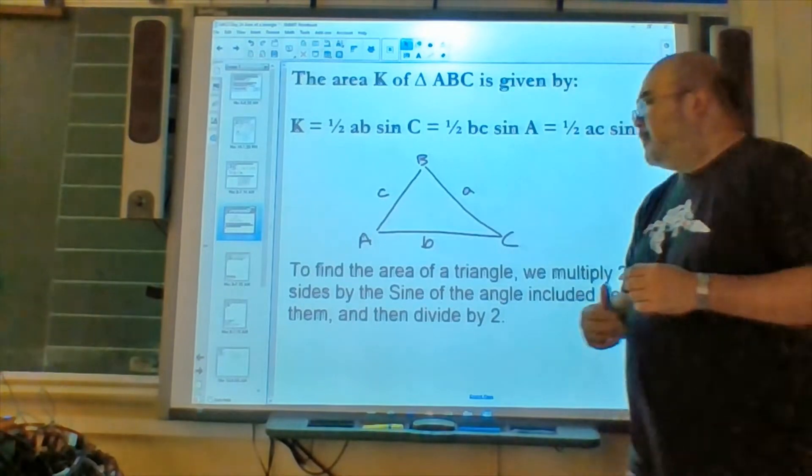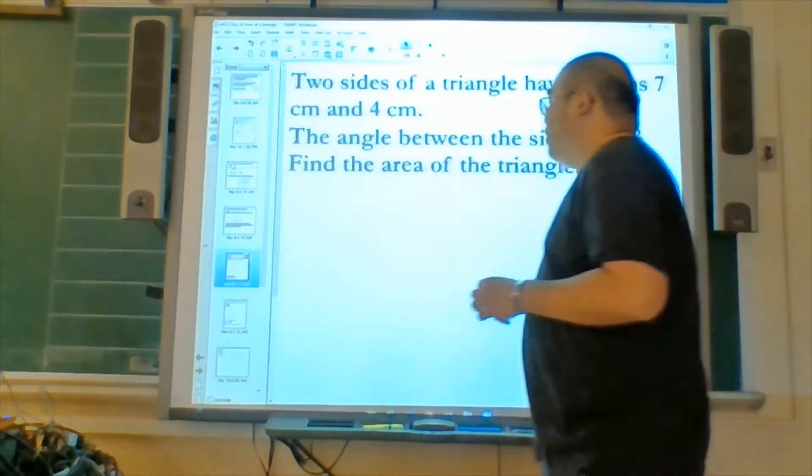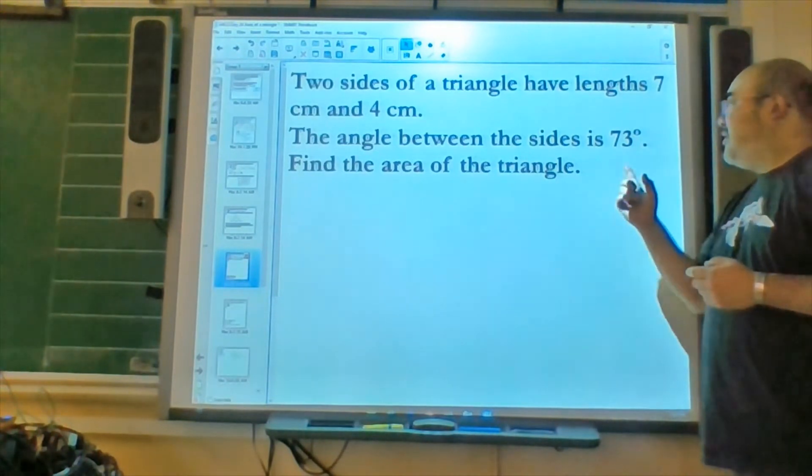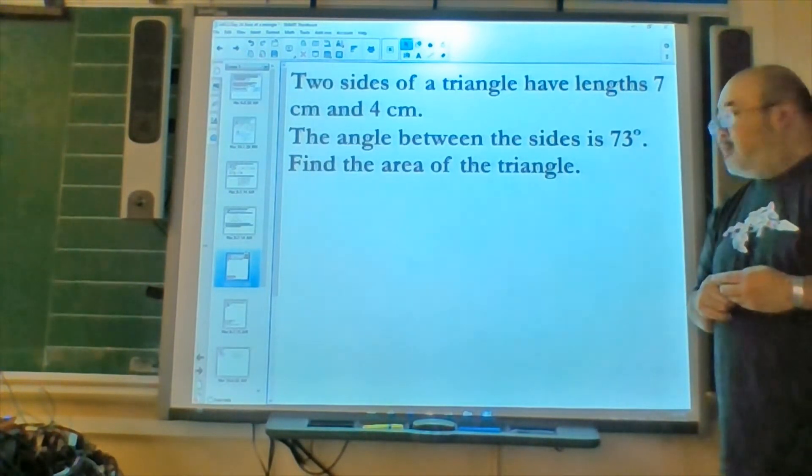Let's try with another problem. Here, two sides of a triangle have lengths 7 and 4 centimeters. The angle between the sides is 73 degrees. Find the area of the triangle.